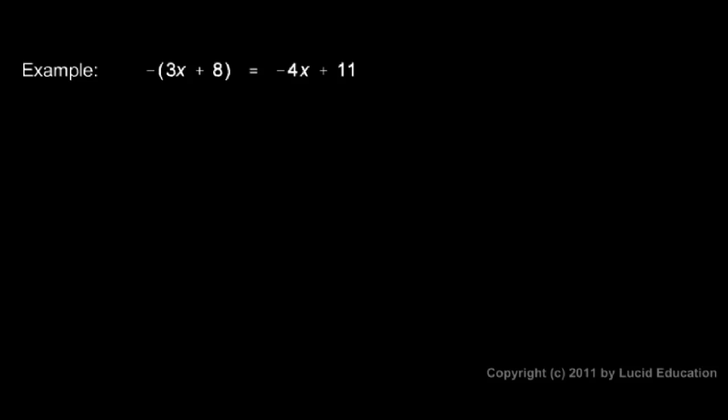Now make sure you understand this example because what happens in this example is something that tricks a lot of people. We have a negative sign right here. It's not a negative 2 multiplied by this or a negative 3. There's no number right there. It's just a negative sign. That's the same as having a negative 1 right here.